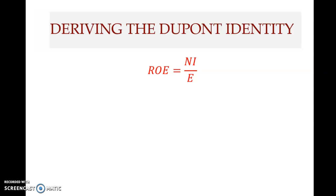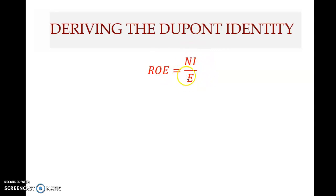The DuPont identity is based on ROE — return on equity. We know that return on equity is net income divided by equity. But we can expand this. How do we expand this?